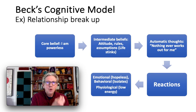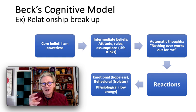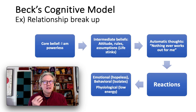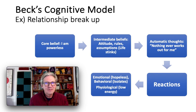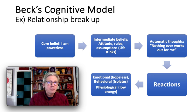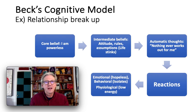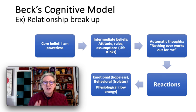That core belief — almost like a faulty hard drive — affects the person's operating system, creating intermediate beliefs, which may be a bit more accessible. These are the attitudes they've developed toward life and people, the rules they've developed for themselves and others, and the general assumptions they operate under. If someone's core belief is 'I am powerless,' their rules, attitudes, and assumptions might be 'life stinks' or 'life is not satisfying.'